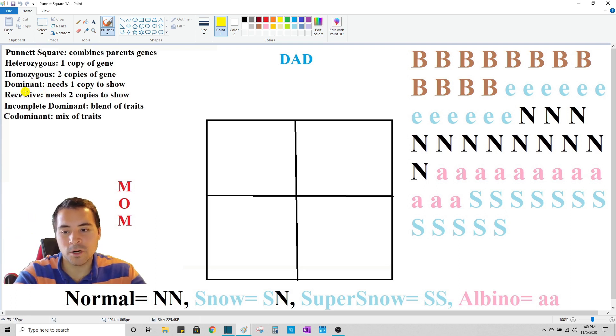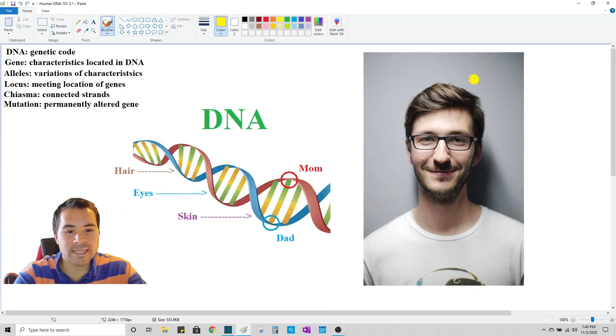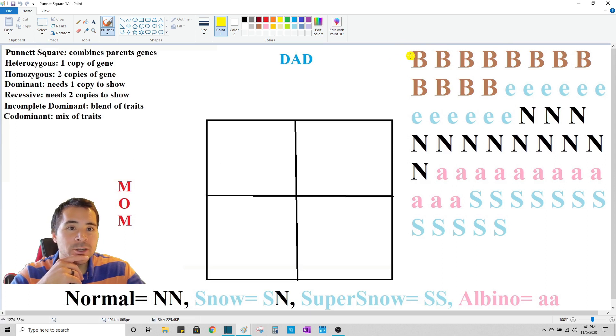So let's cover the first one. For a gene to be dominant, it only needs one copy of that gene to show its characteristic traits. Brown hair is an example of a dominant gene. You only need one copy of the brown hair gene to show that you have brown hair. What if you have one copy of the brown hair gene from your dad and one copy of the blonde hair gene from your mom, you are going to have brown hair because brown is dominant.